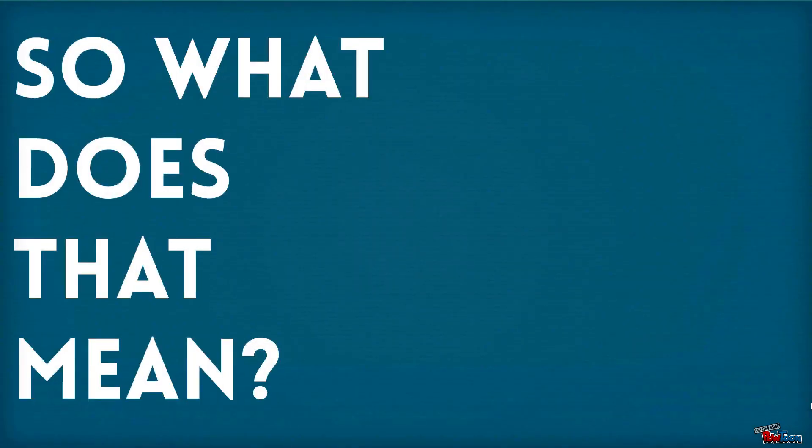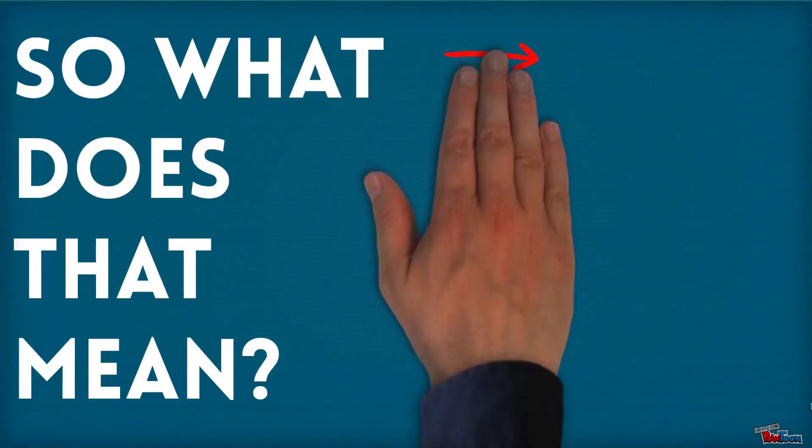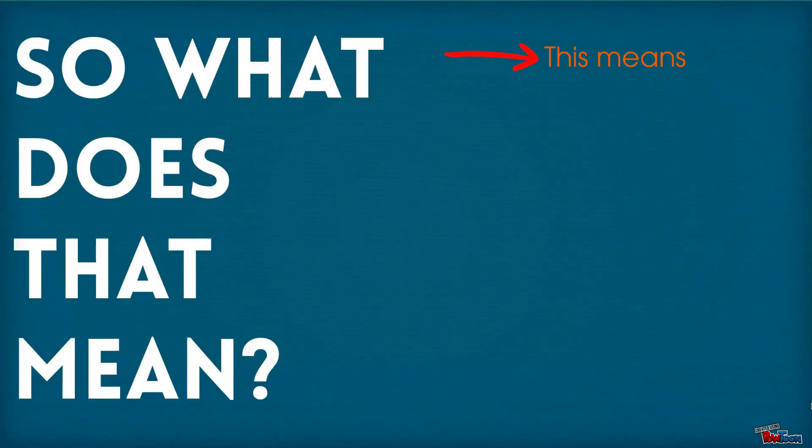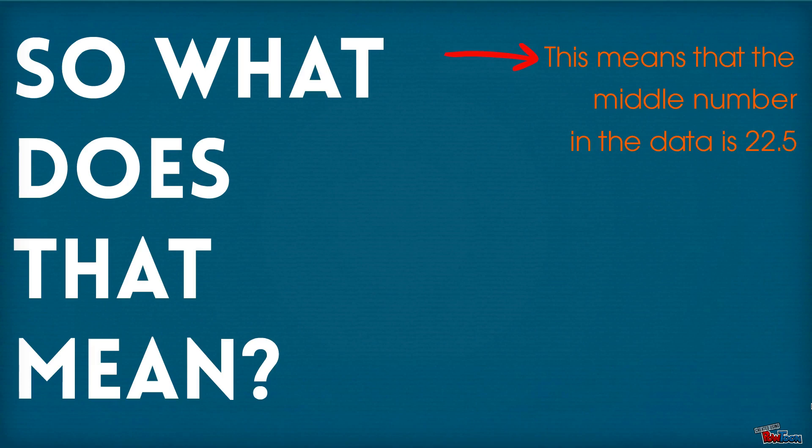So what does that mean? Well, this means that the middle number in the data is 22.5.